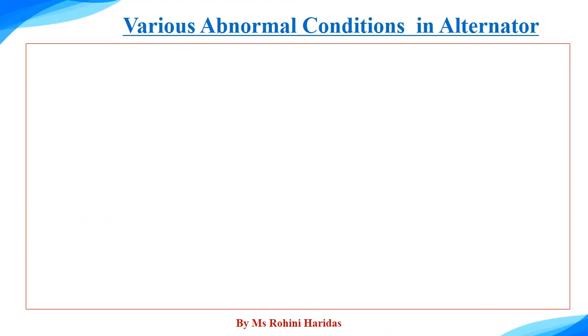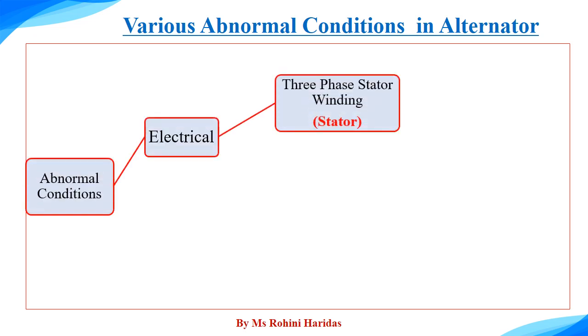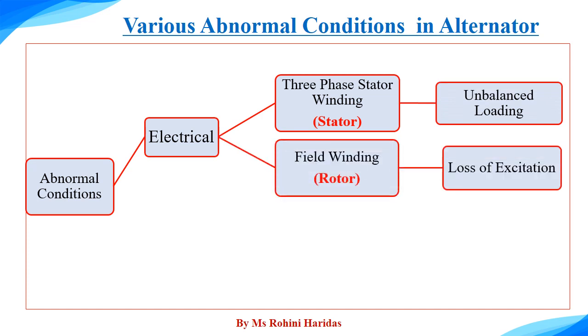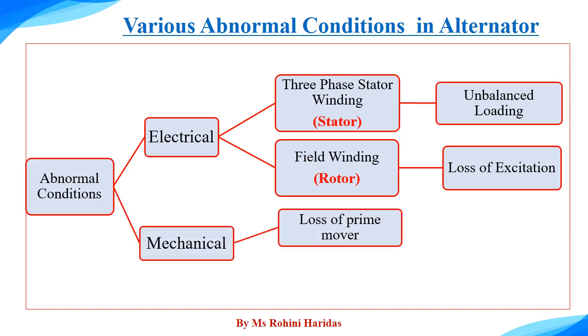In addition to the various electrical fault conditions in alternator, we have to consider the various abnormal conditions too. Electrical abnormal conditions on the stator side, there can be unbalanced loading. On the rotor side, there can be a loss of excitation. Mechanical abnormal conditions. There can be a loss of prime mover and the over-speeding. Now, let us discuss each abnormal condition in detail.